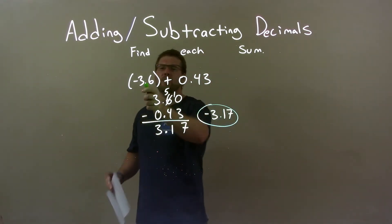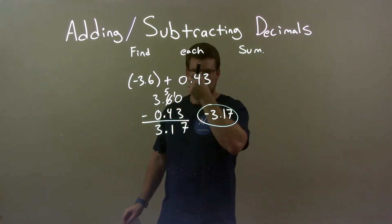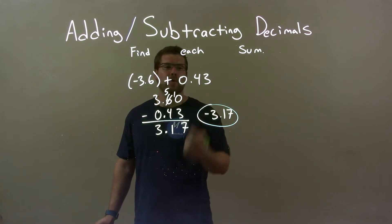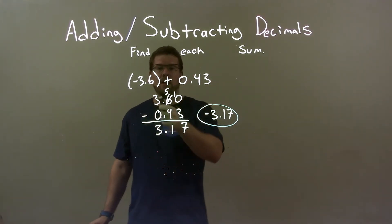So quick recap, we're given negative 3.6, and we have to add 0.43 to that. Well, negative 3.6 is more negative than 0.43, so I found the difference between them two as if they're both positive.